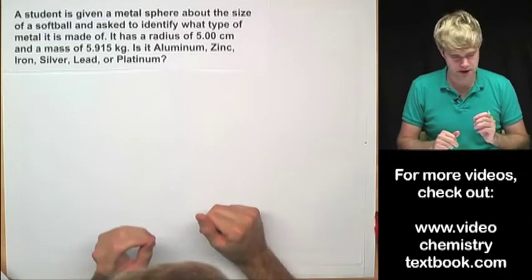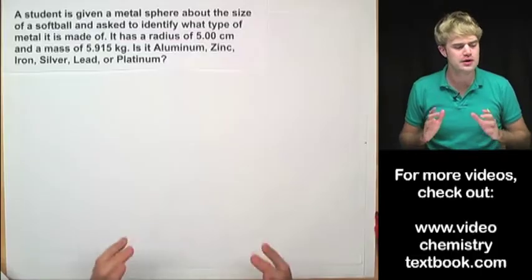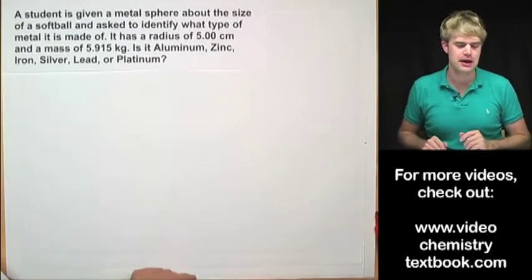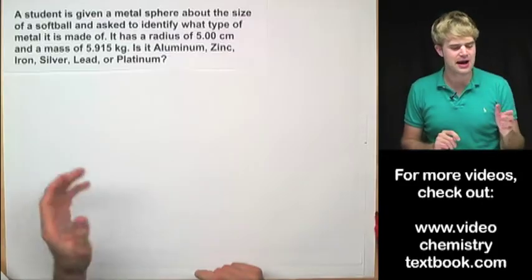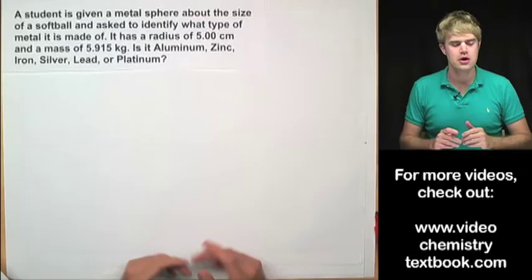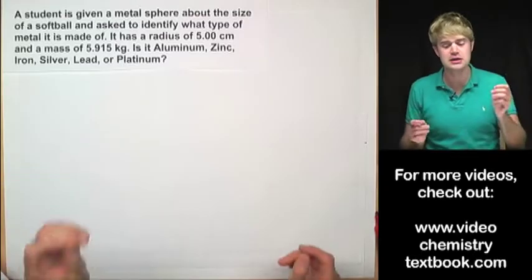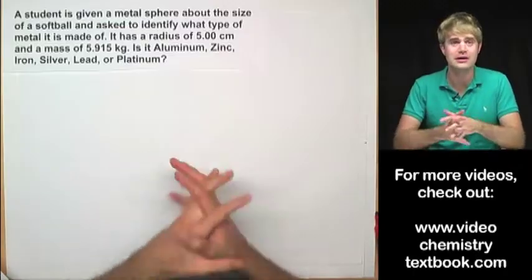A student is given a metal sphere about the size of a softball and asked to identify what type of metal it's made of. It has a radius of 5.00 centimeters and a mass of 5.915 kilograms. So we're asked is it aluminum, zinc, iron, silver, lead or platinum?